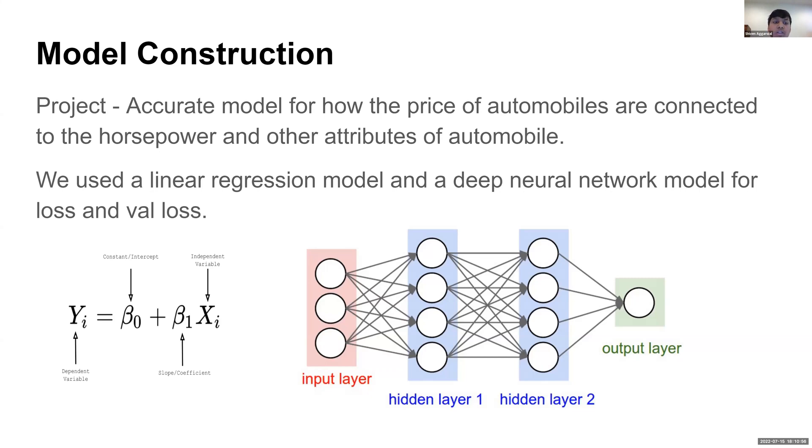For the two models, we started with the baseline linear regression model, but then later moved to try to improve it with the deep neural network model for loss and validation loss. For the linear regression model, we have the bottom left picture for the formula, and for the deep neural network, we have the input layer, the hidden layers, and the output layer for the formulas there.